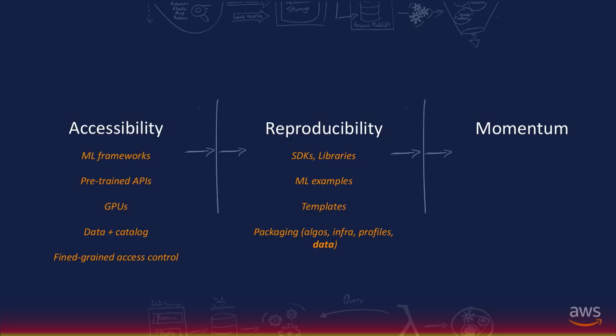By momentum, I mean P equals MV. You thought math wouldn't come in here! But really, I like this because it shows how you can get the scale — the mass at which you operate — and the velocity together, and then push that forward as a business.